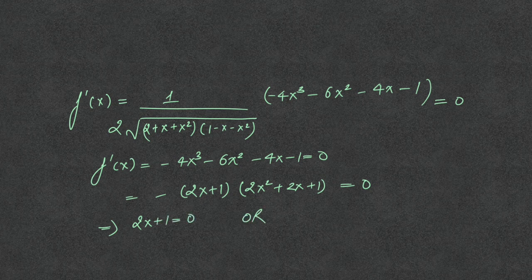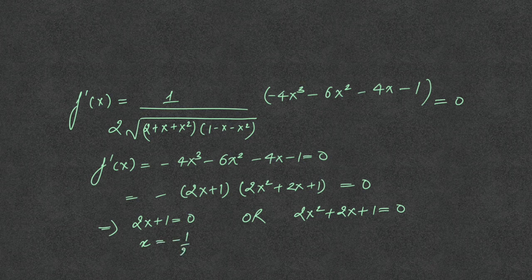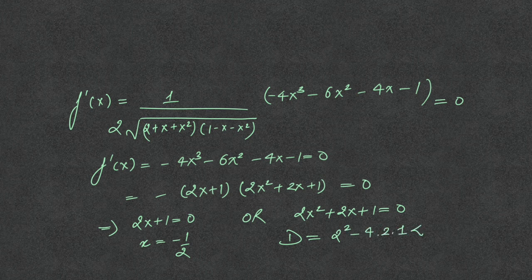Factorizing gives (minus 2x squared plus 2x plus 1), which implies (2x plus 1) equal to 0, so x equals minus half. For the other factor, 2x squared plus 2x plus 1 equal to 0, we check the discriminant: b squared minus 4ac equals 4 minus 8, which is negative. So no real solution exists for that equation, meaning no additional real critical points.